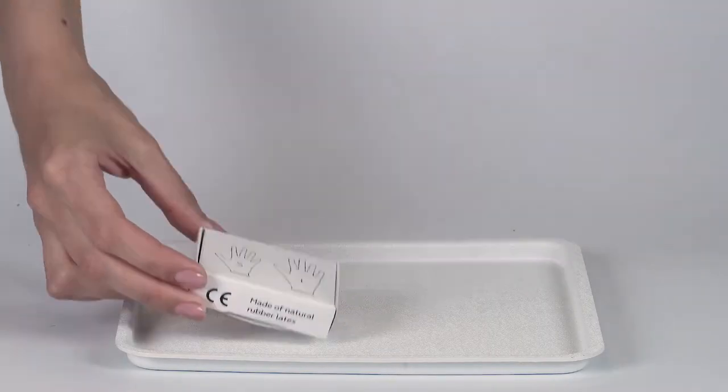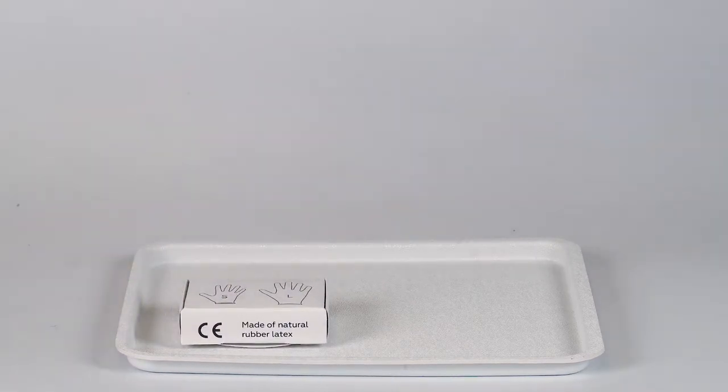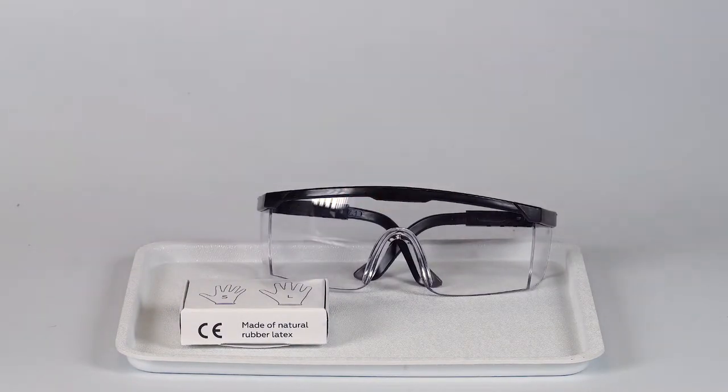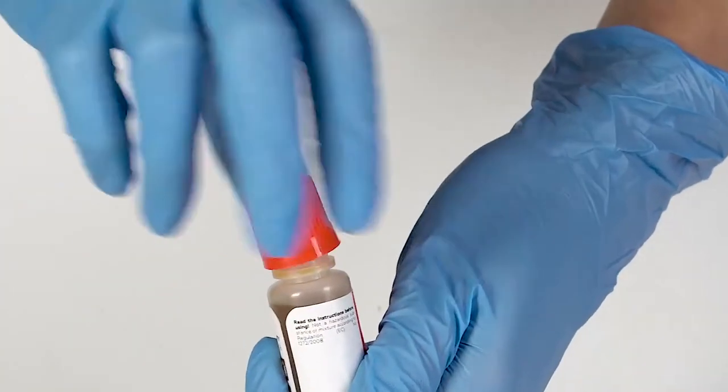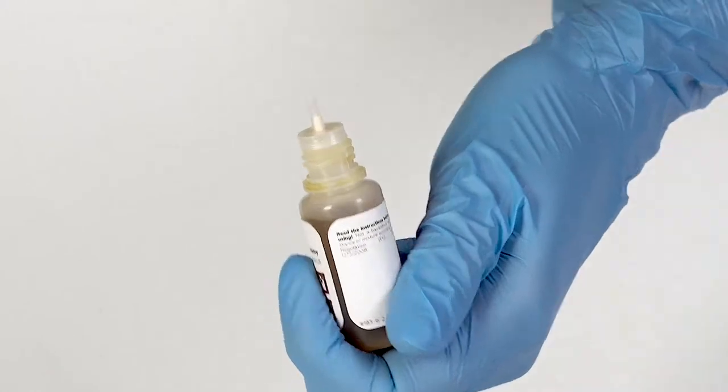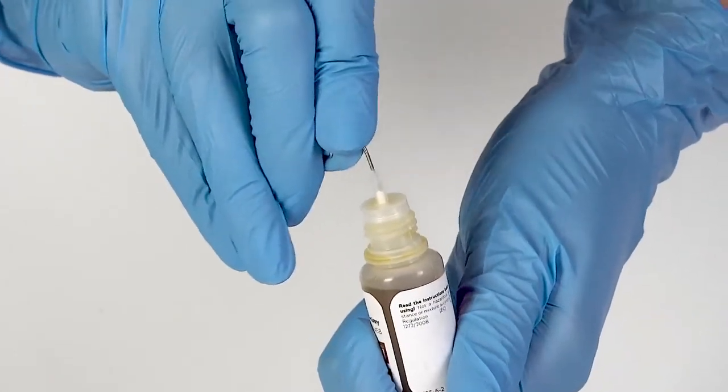Perform this experiment on a plastic tray to contain any possible spills. Don't forget to put on protective gloves and goggles before doing the experiment. To open a bottle containing a reagent, push down the cap and turn it. Pierce the bottle nozzle with an unbent paper clip.